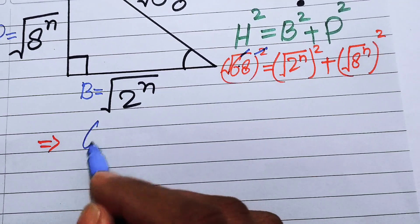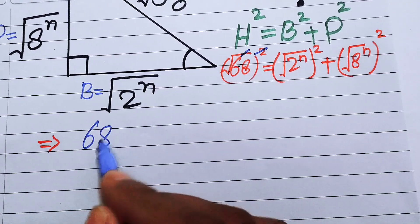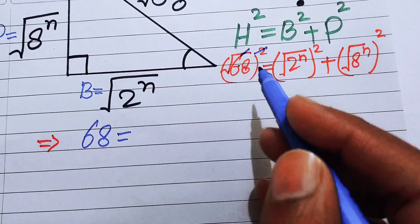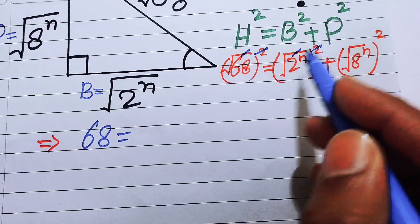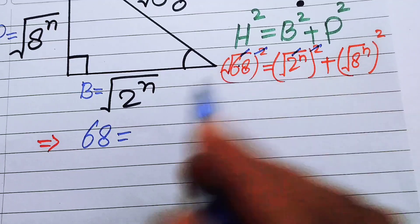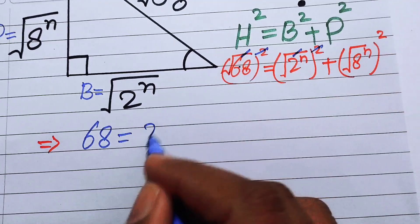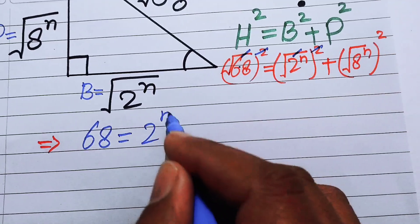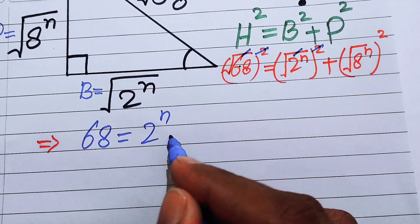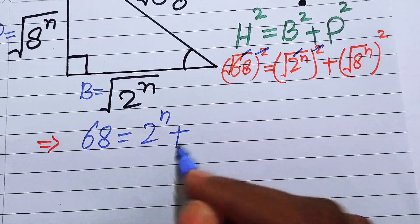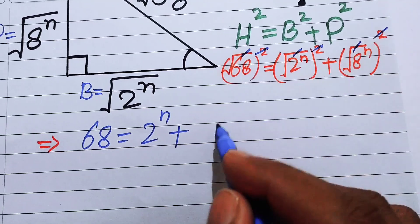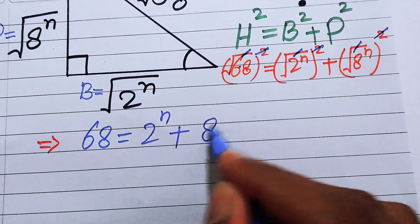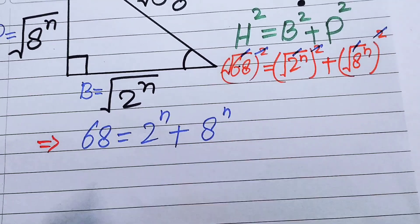The squares and square roots cancel each other, so we get: 68 equals 2 to the power of n plus 8 to the power of n.